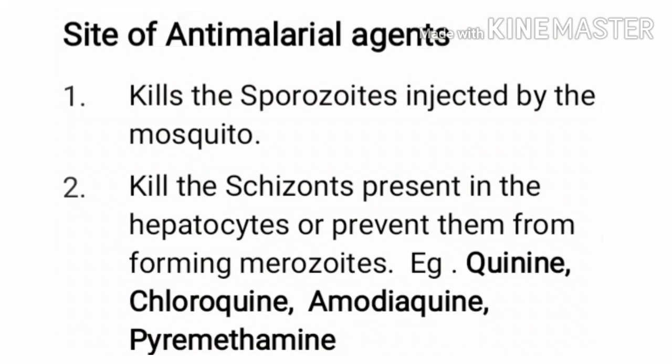Next is the site of anti-malarial agents. There are four possible sites for drug therapy at the stage of the disease. The first is to kill the sporozoites injected by the mosquito or prevent sporozoites from entering the liver. The drugs used at this stage are known as prophylactic agents. However, no drug is effective at this stage.